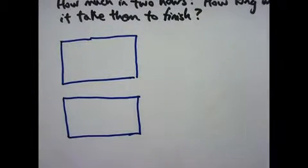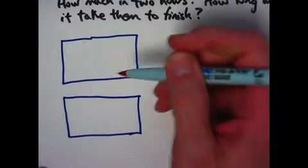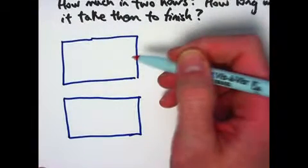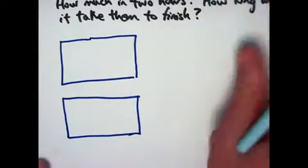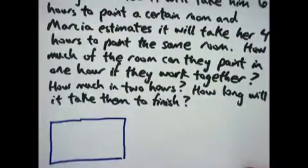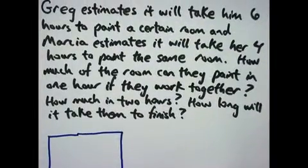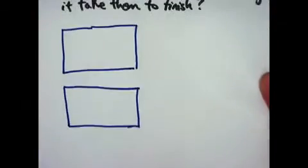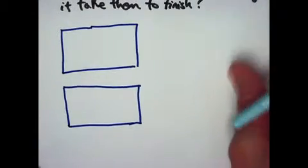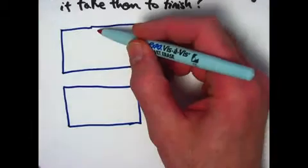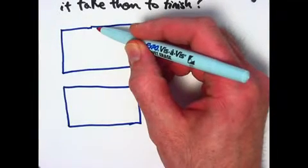I'm going to think about how quickly Greg can paint this room or this wall and Marsha separately, before I try to think about them doing it together. So Greg takes 6 hours to paint the room. 6 hours for Greg and 4 hours for Marsha. So if the wall represents the room, I'd have to break it into 6 equal pieces.